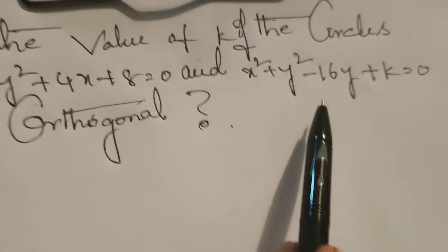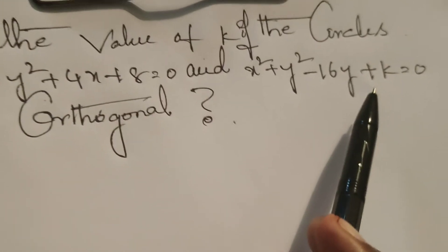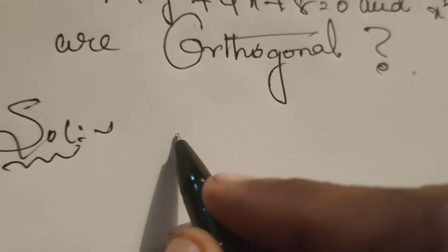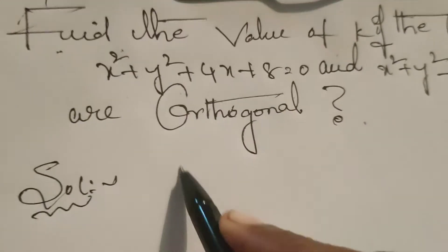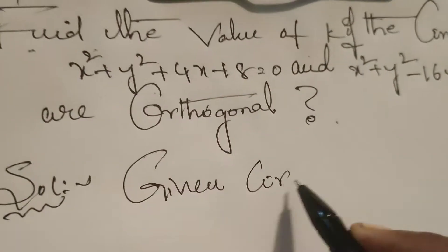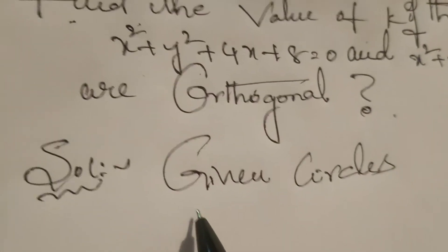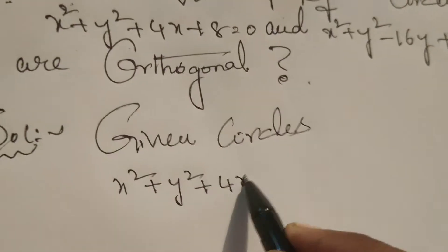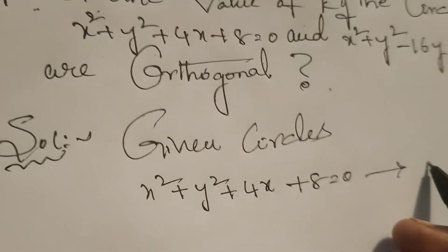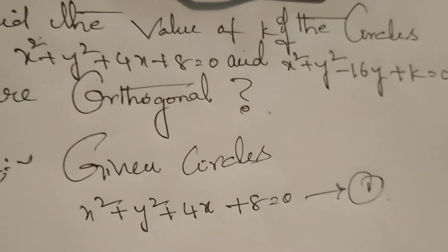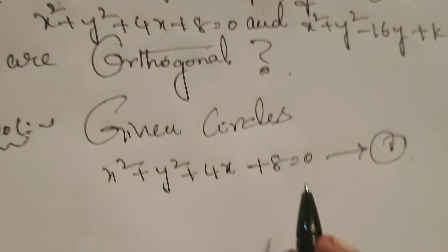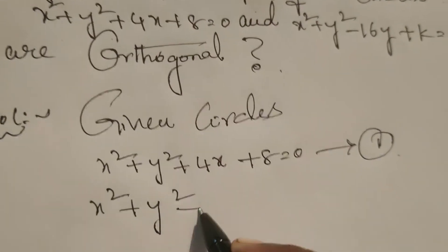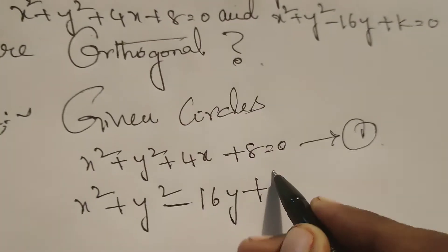The second circle constant has no fixed value — k is there, and we also need to find out the value of k. Let us once again write the given circles. The first circle is x squared plus y squared plus 4x plus 8 equals 0 — assume this is equation number 1. The second equation is x squared plus y squared minus 16y plus k equals 0.